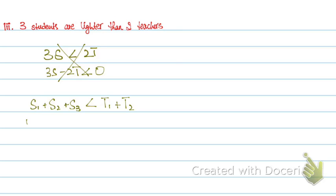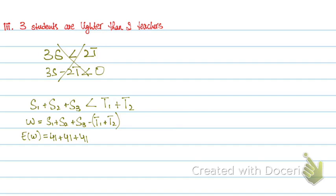My random variable, let's call it W, will be S1 plus S2 plus S3 minus T1 plus T2. So if I have to find the mean of W, this will be 41 plus 41 plus 41 minus 60 and 60. The mean turns out to be 123 minus 120, which is 3.